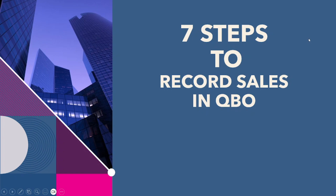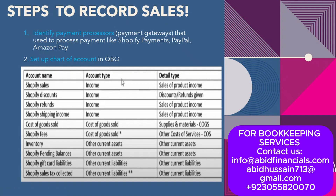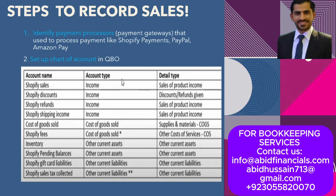There are seven steps to record Shopify sales in QuickBooks. The first step is to identify payment processors — also called payment gateways — that are attached to your Shopify account and used to process payments. Customers send payment and we receive it through these gateways, such as Shopify Payments, PayPal, Amazon Pay, FMPay, and NayaPay.